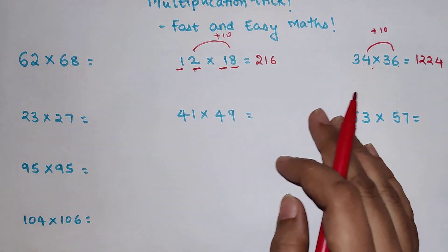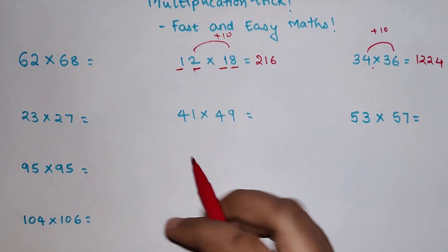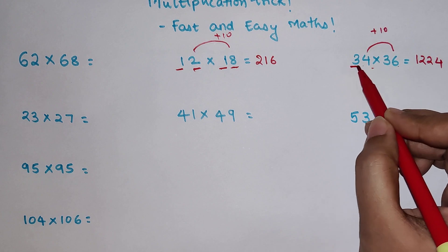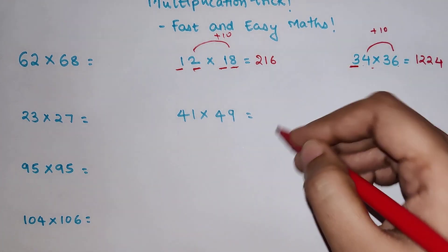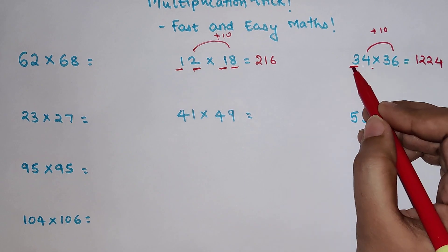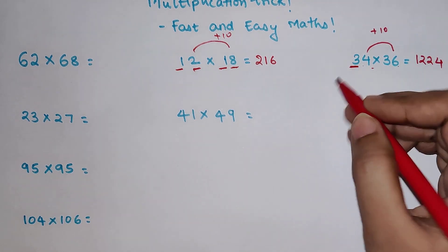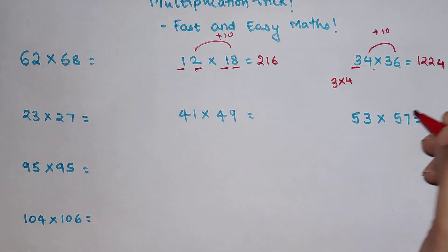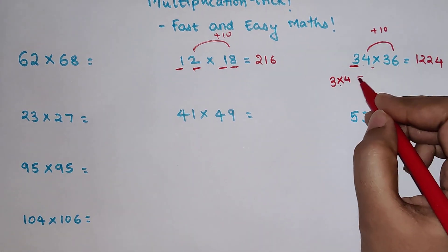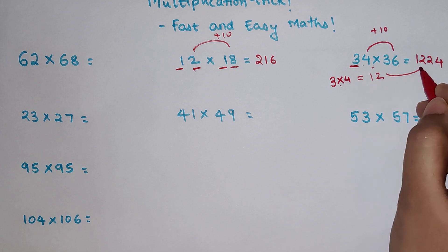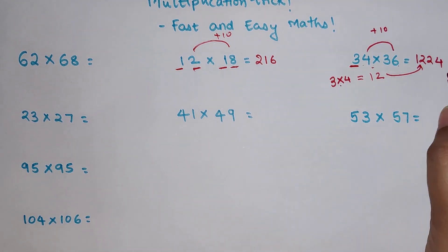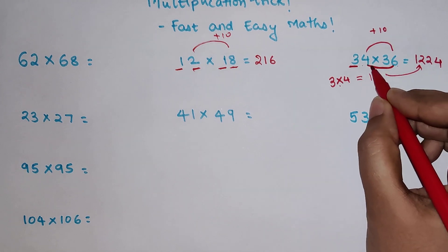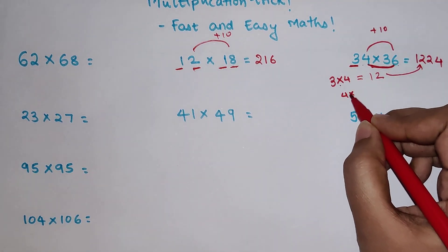Once this criteria has been met then what you should be doing is that it is very simple, you multiply the 10th digit with the number next to it. So basically 3, what comes after 3 is 4. So you will multiply 3 into 4 and 3 into 4 gets you what, 12. So that forms the first part of your answer. For the second part all you have to do is just multiply the last two digits that is 4 into 6.